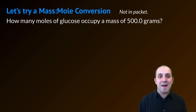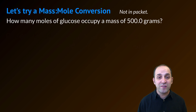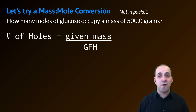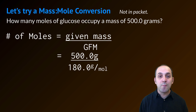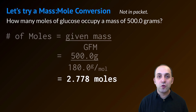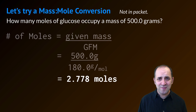Let's go the other way and do a mass-to-mole conversion. How many moles of glucose occupy a mass of 500.0 grams? Pause the video and try it on your own, then we'll go through it together. The equation from reference table T: number of moles equals given mass divided by gram formula mass. Substituting in 500.0 grams and the gram formula mass of 180 grams per mole, we get an answer of 2.778 moles of glucose, taken to the correct number of significant figures.